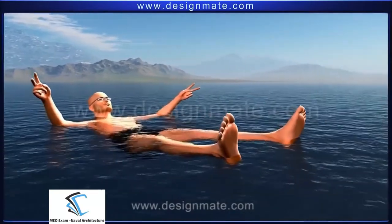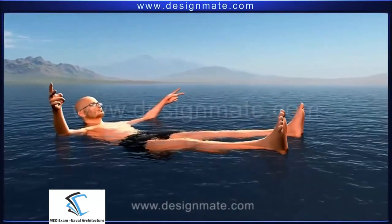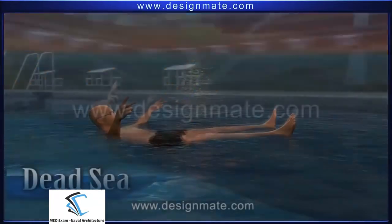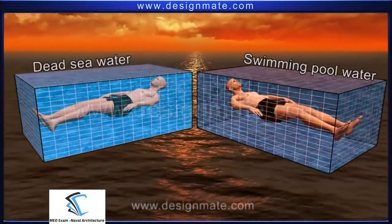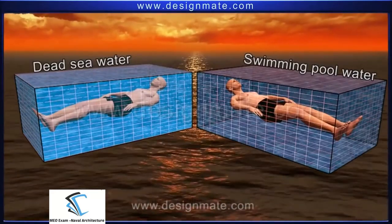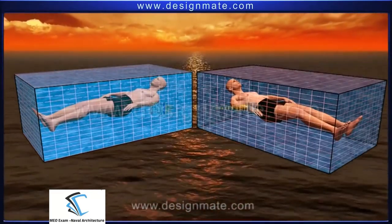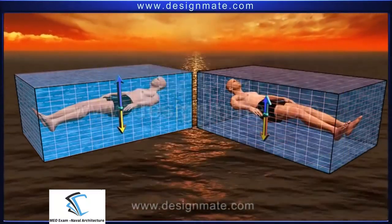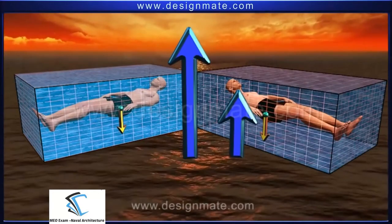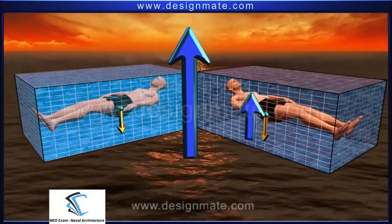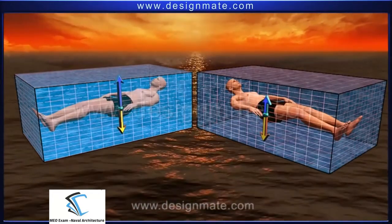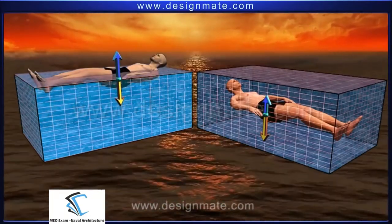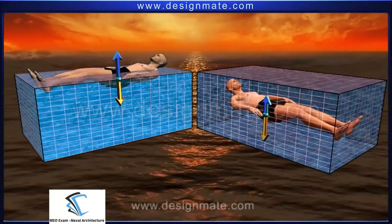Can you now use Archimedes' principle to understand why it is possible to float effortlessly in the Dead Sea? Due to the presence of a large quantity of salt, the density of the Dead Sea water is larger than that of pool water. Thus, the buoyant force in the Dead Sea is larger — even larger than your weight — so it pushes you up to the surface and keeps you afloat, while in a swimming pool you sink.